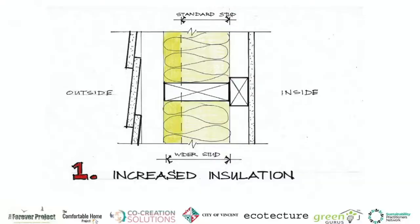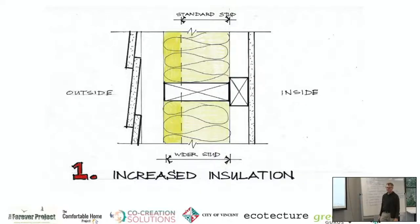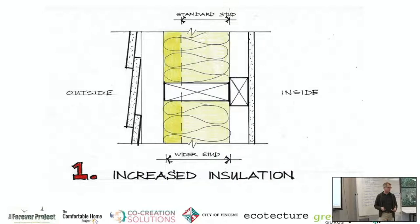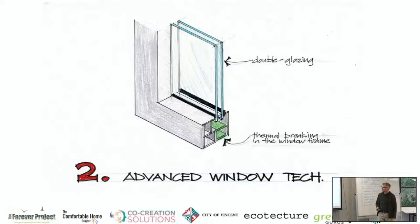Perth is actually relatively easy and affordable to achieve passive house — probably one of the most affordable places in the world to build one, because you can get away with a standard wall frame and insulation and still achieve that level. It does cost more because of a few other things, but it's very affordable to do in Perth.